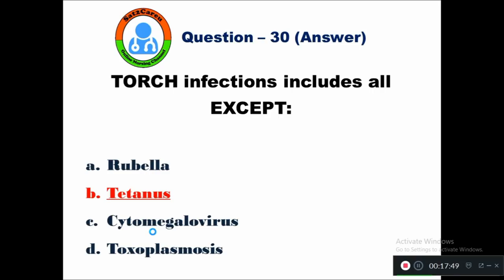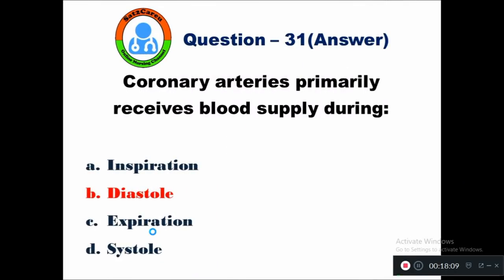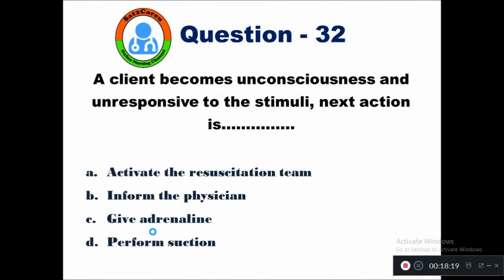Question 31: Coronary arteries primarily receive blood supply during — option A inspiration, B diastole, C expiration, D systole. Coronary arteries primarily receive blood supply during diastole, when the heart muscles relax.